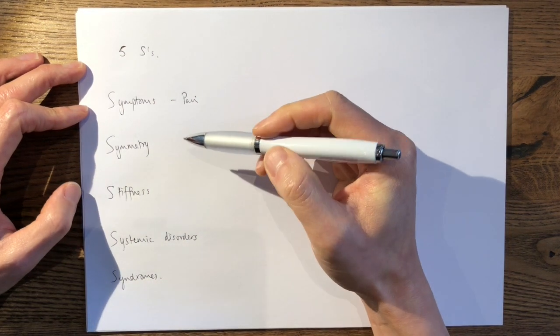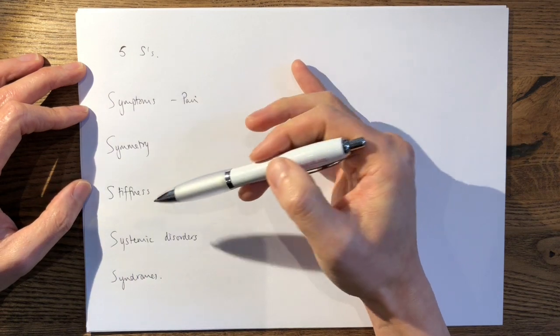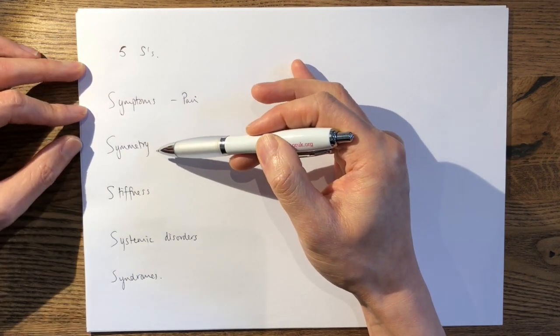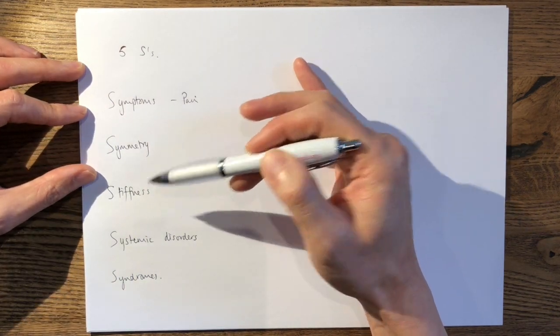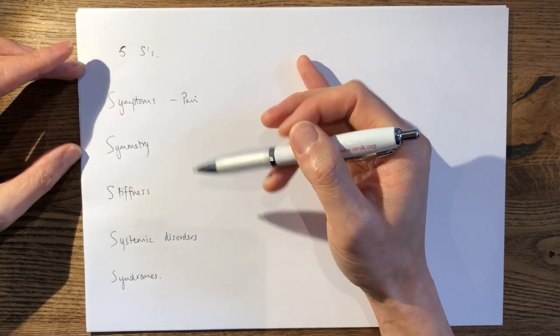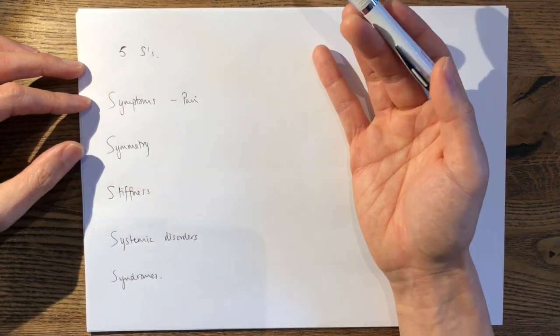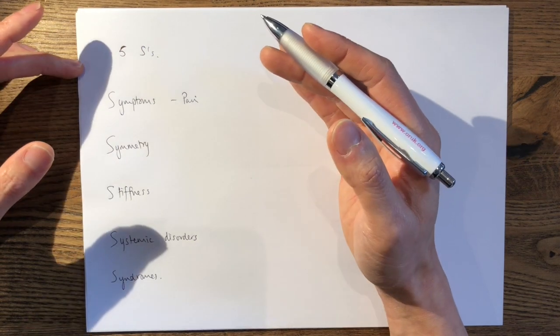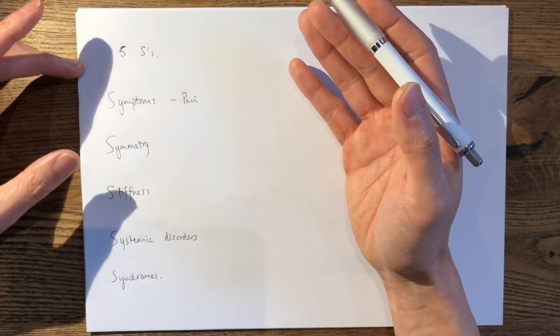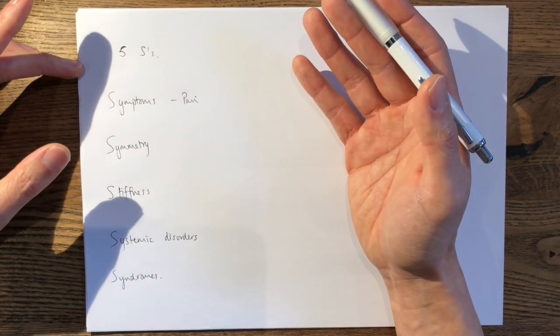So if you had a child with a painful, asymmetrical, stiff angular deformity with associated systemic disorders and syndromes, then this is more likely to represent a pathological genuvarum or genuvalgum, which would require treatment.